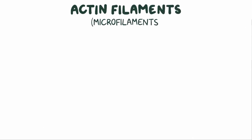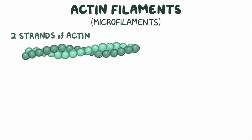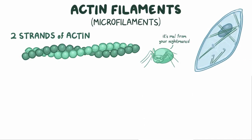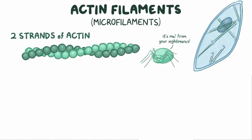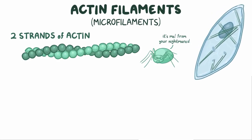Actin filaments are the thinnest of the three proteins, so they're also called microfilaments. They're made up of two strands of actin proteins arranged in a long twisting chain like a twisted necklace. The actin filaments connect to one another to form a network, like a spider's web, that's located just below the cell membrane. The actin filaments slide closer together and further apart.